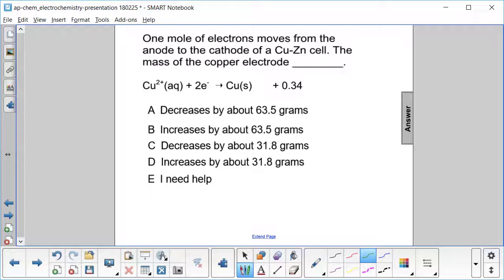One mole of electrons moves from the anode to the cathode of a copper zinc cell. The mass of the copper electrode, what happens to it?